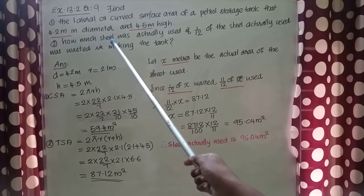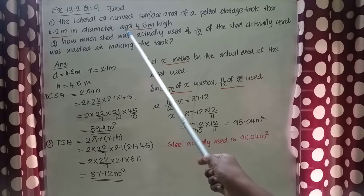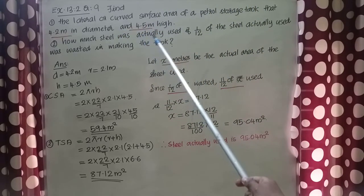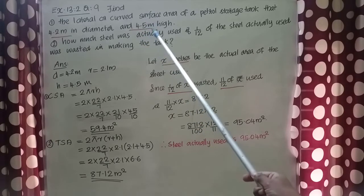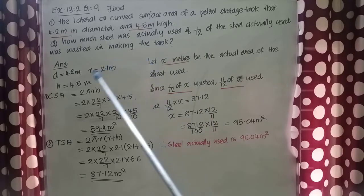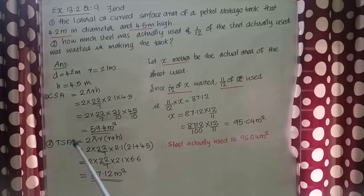There is one more question. The second question is how much steel was actually used to make the tank? We need to make a closed cylindrical tank. First we need to find out the total surface area. TSA is equal to 2 pi R into R plus H. That is equal to 2 into 22 by 7 into 2.1 into 2.1 plus 4.5. That is equal to 87.12 meter square.